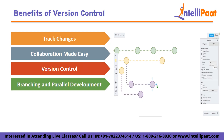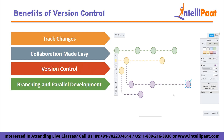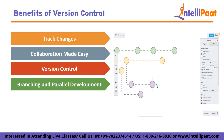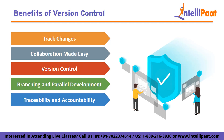Branching and parallel development: version control systems allow you to create branches, which are independent lines of development. This feature enables you to work on different features, bug fixes, or experiments in separate branches without affecting the main code. Branches provide isolation and flexibility, and once a branch is ready, it can be merged back into the main project. Traceability and accountability: version control provides traceability by associating each change with the author, timestamp, and relevant information. This helps you understand who made specific modifications and why, and promotes accountability as everyone's contributions are tracked and can be reviewed.